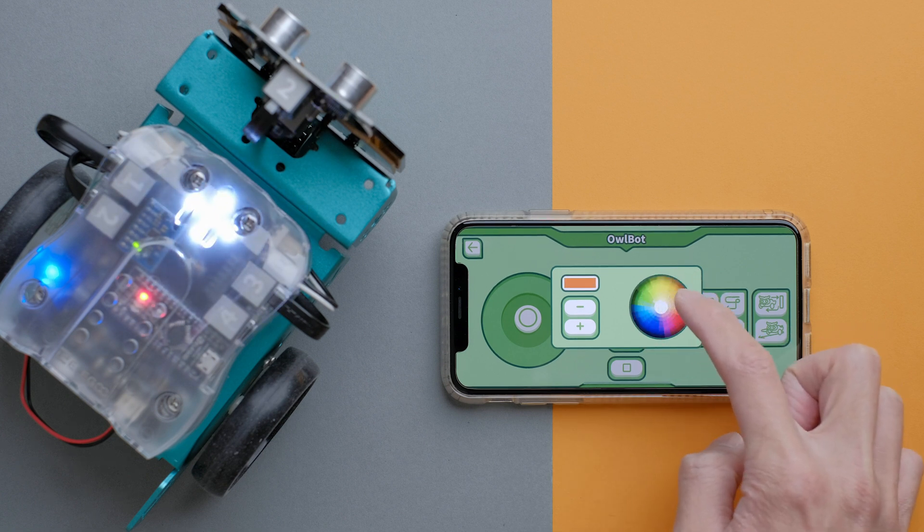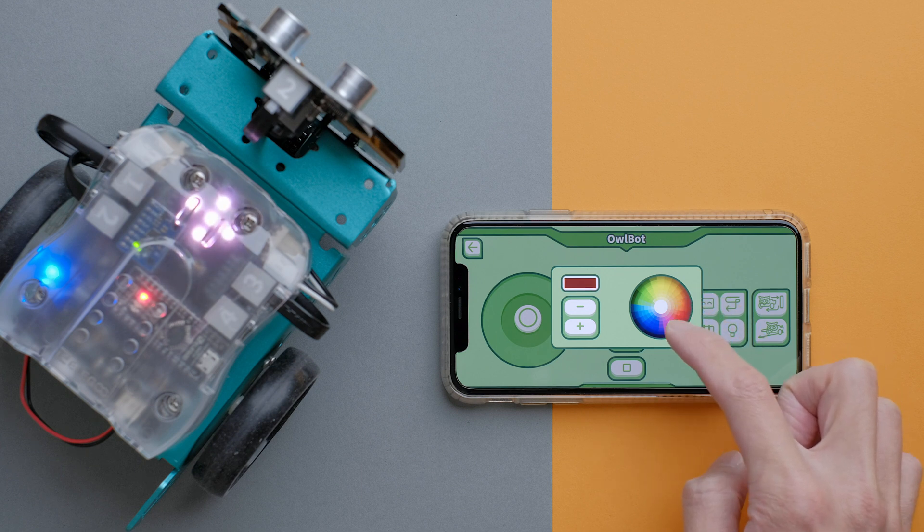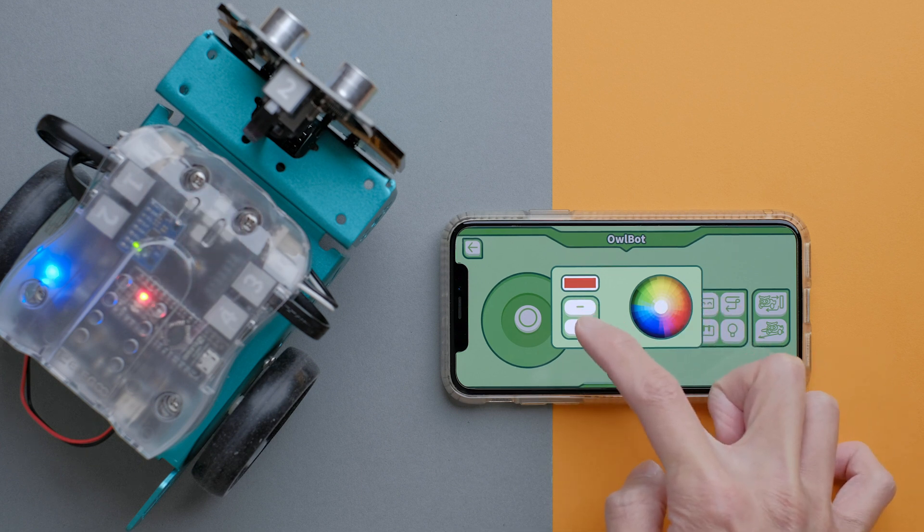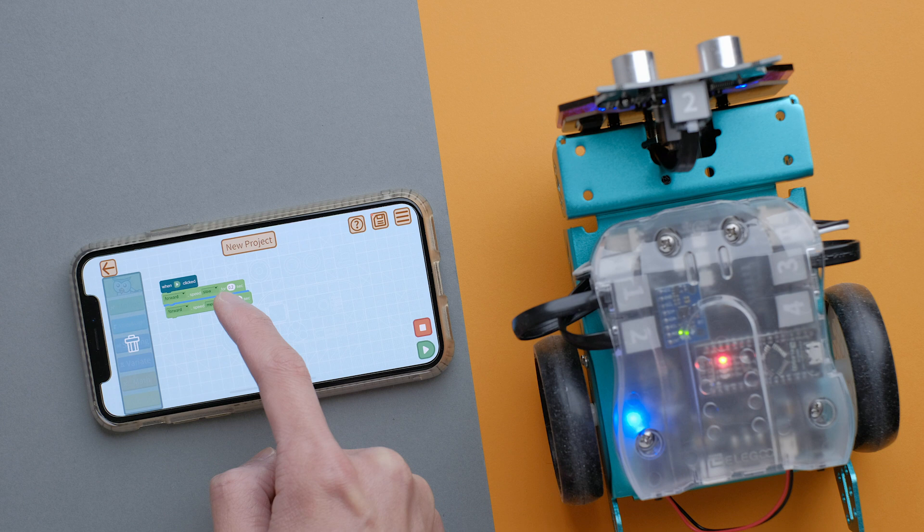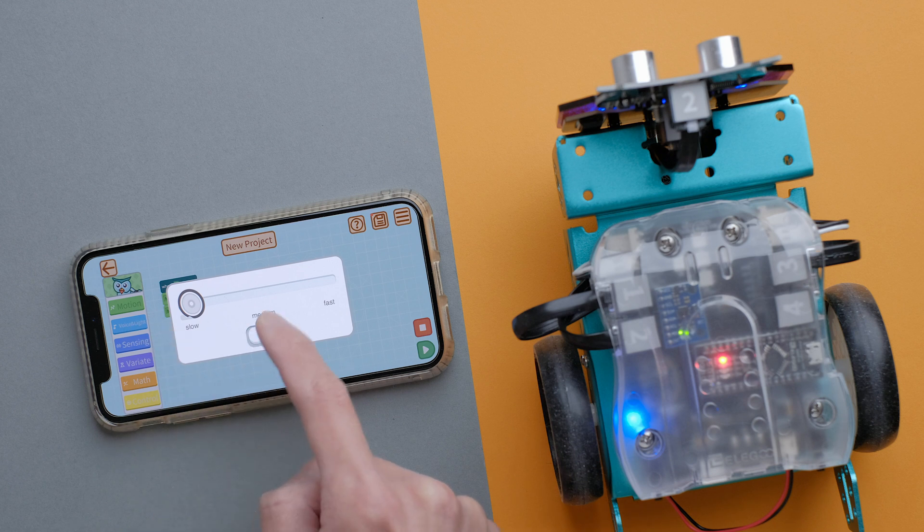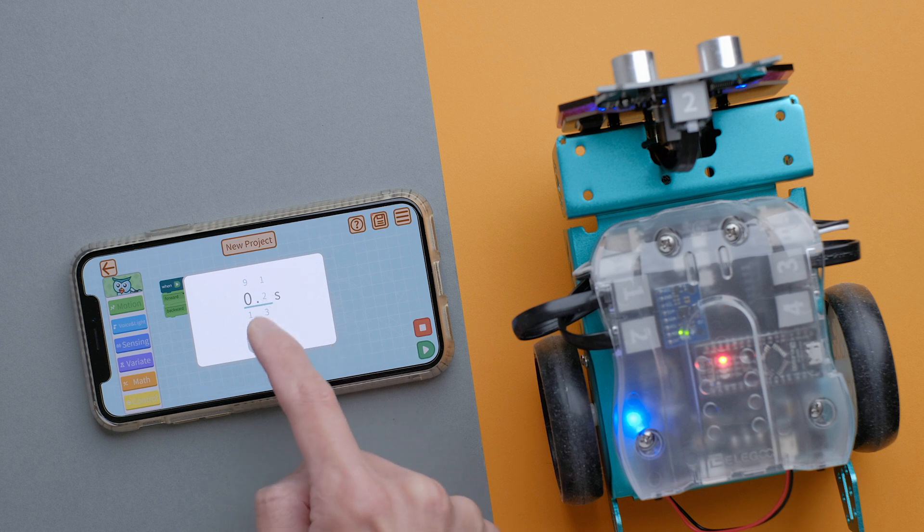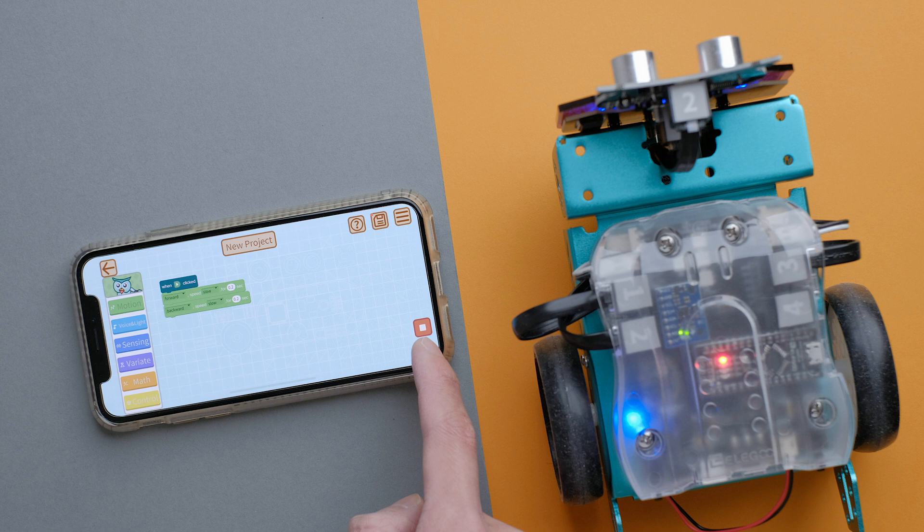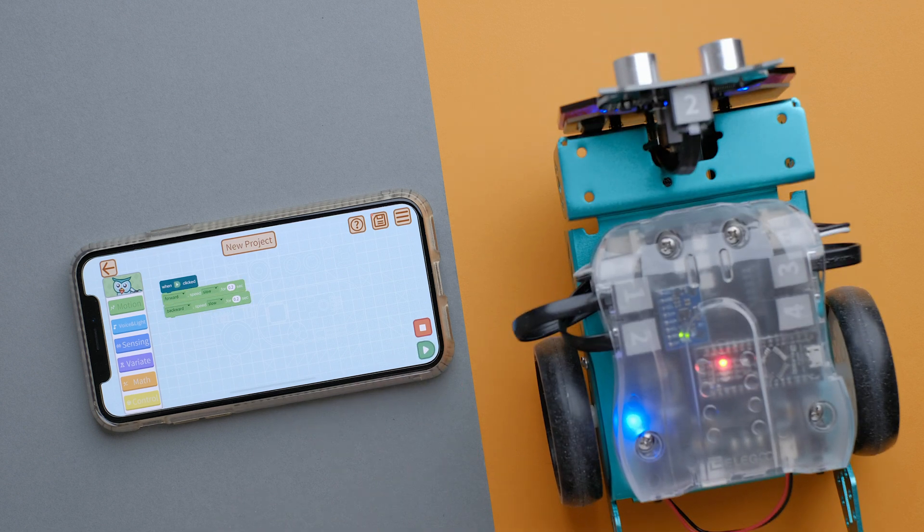Moving on to the slightly more advanced mode is the graphical programming section. By using the simple drag and drop commands, you can program basic functions to control the robot. It's a very nice and easy way to introduce programming theory to people, including myself, which I'll happily admit that I'm not too comfortable with. I think there's enough for beginners to play and learn within the app, but there's so much more as mentioned at the beginning of the video.